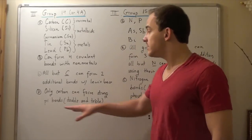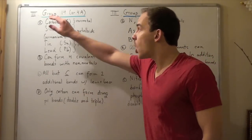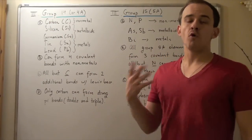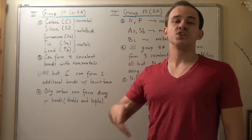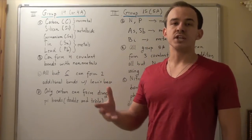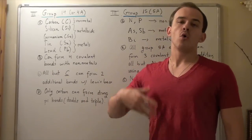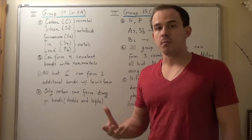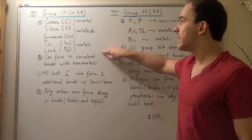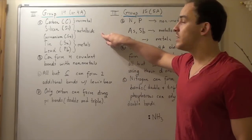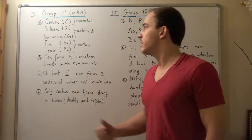Now only carbon is capable of forming strong pi bonds. In other words, it can form a strong double bond or a strong triple bond. No other atom found in group 14 or 4A has that capability.